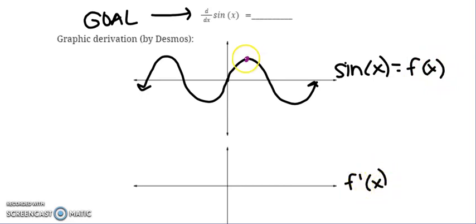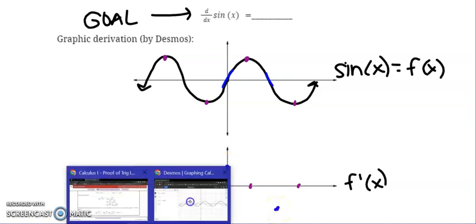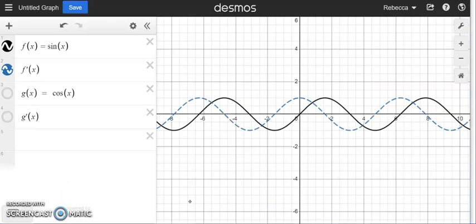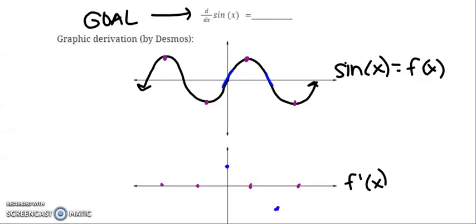So if I think about graphing the derivative, right, so let's say sine of x is equal to f of x, then I want to graph f prime on this coordinate grid. Well, anywhere that I have a slope of zero, I'm now going to touch the x axis.